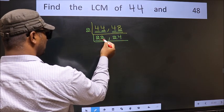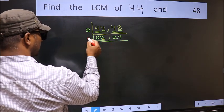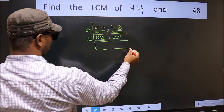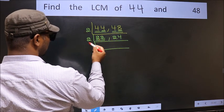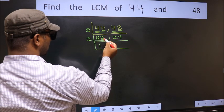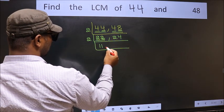Now here we have 22, last digit 2, even, so take 2. First number 22, when do we get 11 in 2 table? 2 times 11 is 22. The other number 12, 2 times 6 is 12.